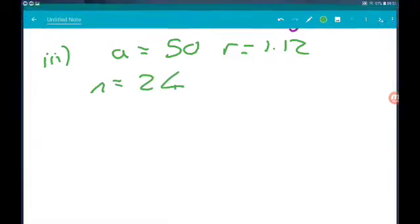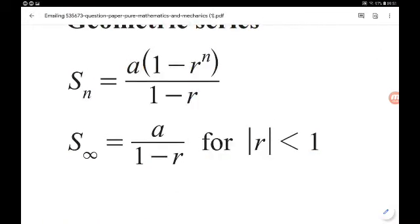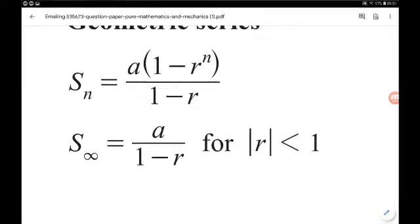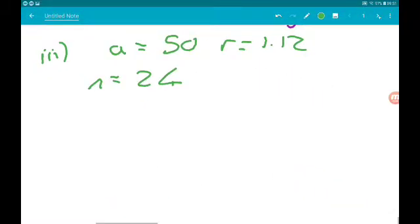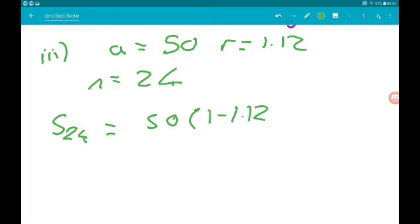Now again, we're given the formula. So the sum to n is a times 1 minus r to the n over 1 minus r. So the sum to 24 is 50 times 1 minus 1.12 to the 24 over 1 minus 1.12.